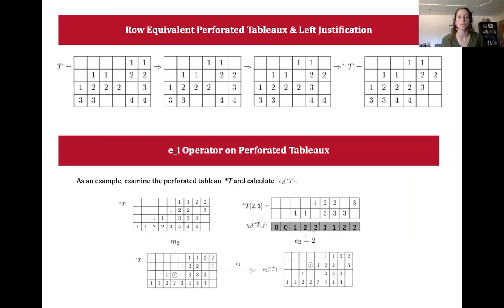Row equivalent perforated tableau have the same content in the rows with a different valid distribution in the columns. The p-tableau below are all row equivalent and transforming into the left-justified form where all content is pushed as far left as possible while maintaining column strictness.